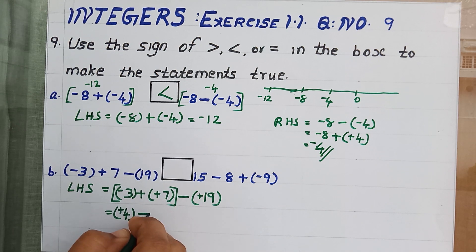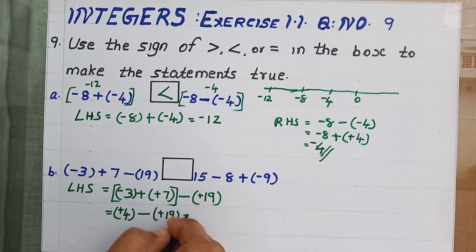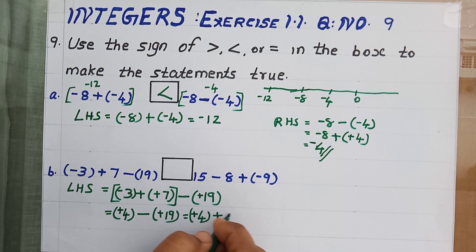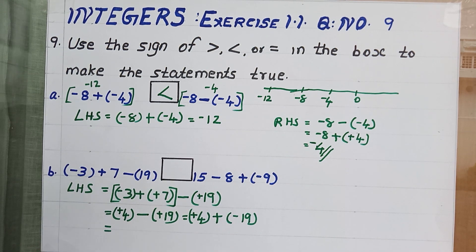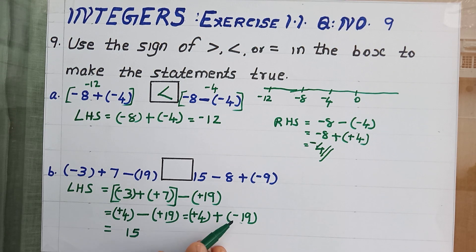Then rewrite the remaining number: plus 4 minus 19. Here the operation is subtraction, so change subtraction into addition and take the additive inverse of the second number, giving plus 4 plus minus 19. Just subtract both numbers and we will be getting 15. Give the sign of the greatest number, so minus 15 is the LHS answer.